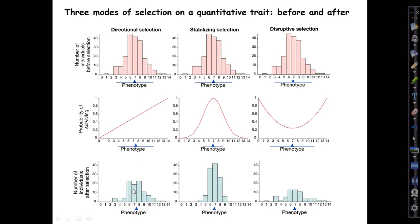Now about modes of selection. We've been looking implicitly or explicitly at directional selection, the first of three modes, summarized in this figure from Herron and Freeman. It's called directional because its effect is to move the mean value of the trait in one direction or the other. The figure in the middle shows the selection gradient as an increased probability of surviving if the phenotype value on the x-axis gets larger; it could also favor a smaller phenotype value.